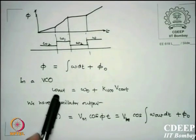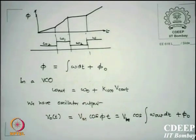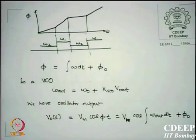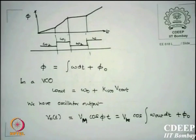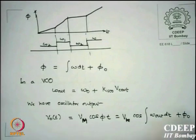In a VCO, ω_out = ω0 + K_VCO · V_control. This is the principle of the VCO. The oscillator output can be written as Vm·cos(φ(t)), so V_out = Vm·cos(∫ω_out·dt + φ0). Substituting gives: V_out = Vm·cos(ω0·t + K_VCO·∫V_control·dt + φ0).